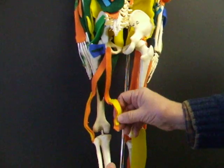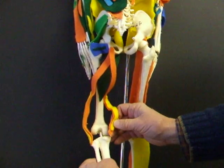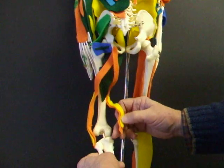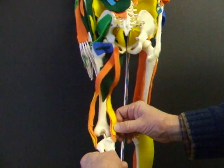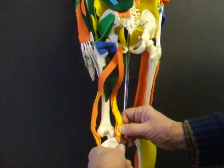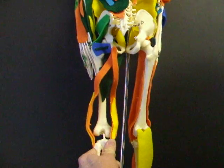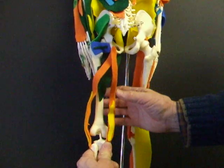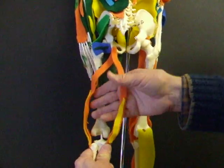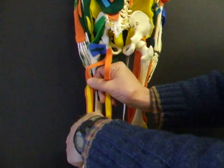The semitendinosus and semimembranosus muscles attach more medially to the tibia, just distal and a little bit lateral, just distal to the knee. So these hamstrings all together would create knee flexion.